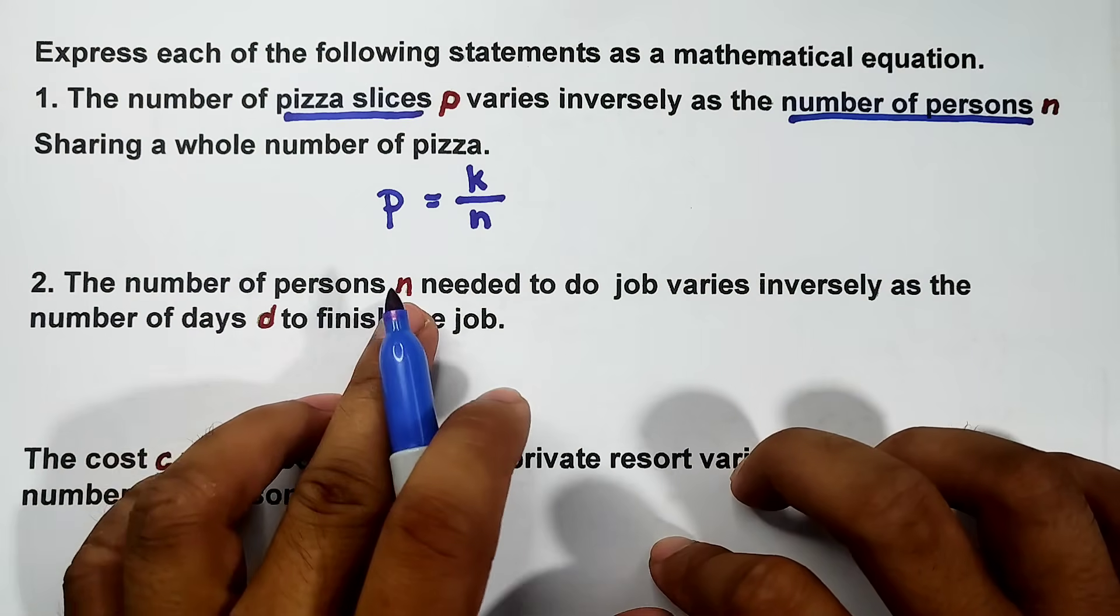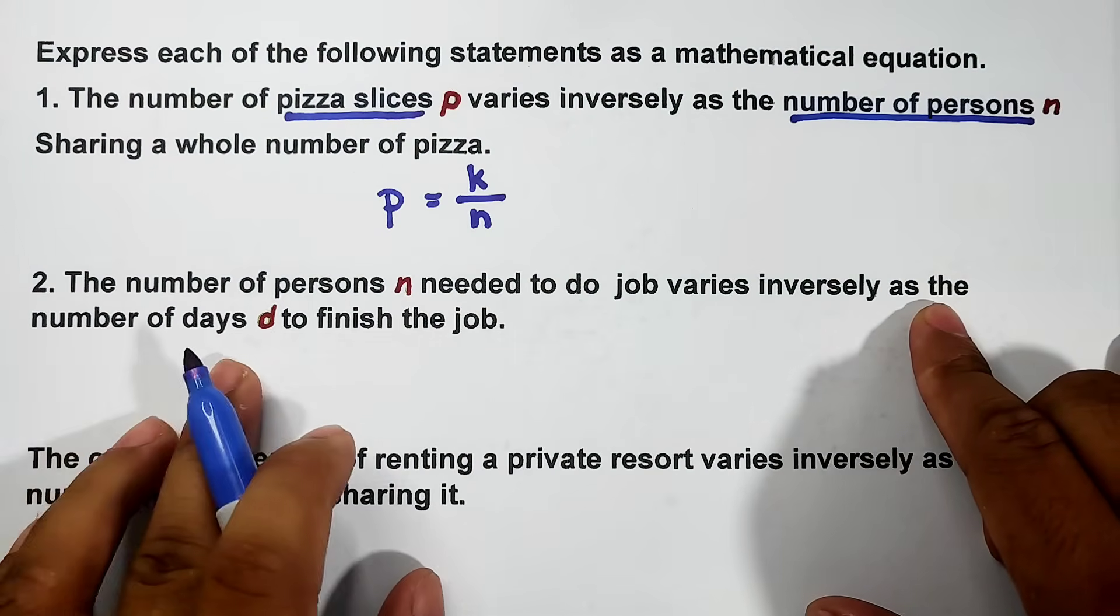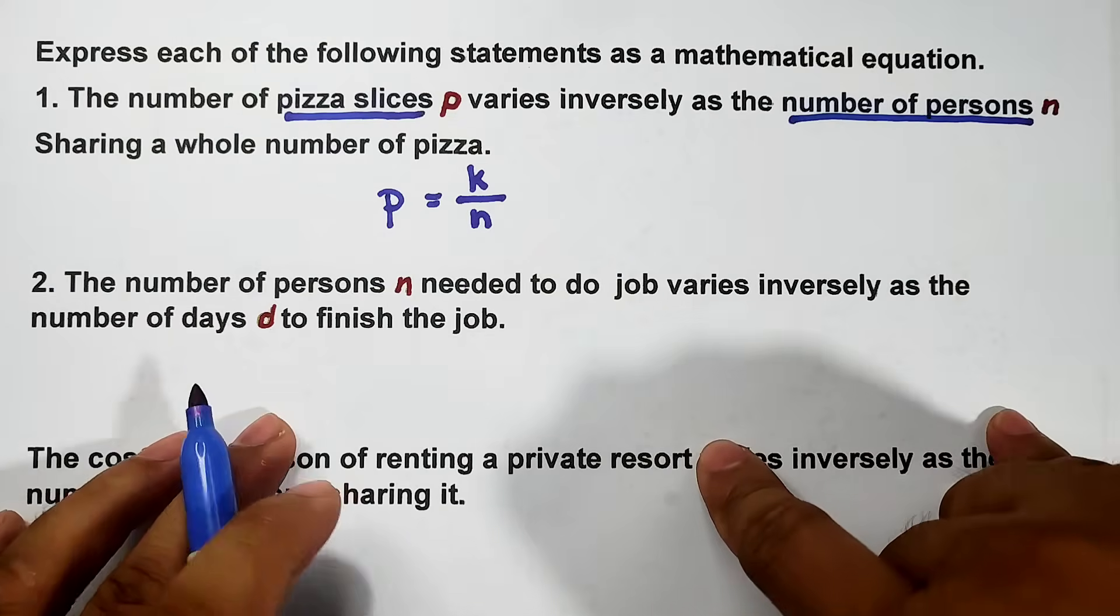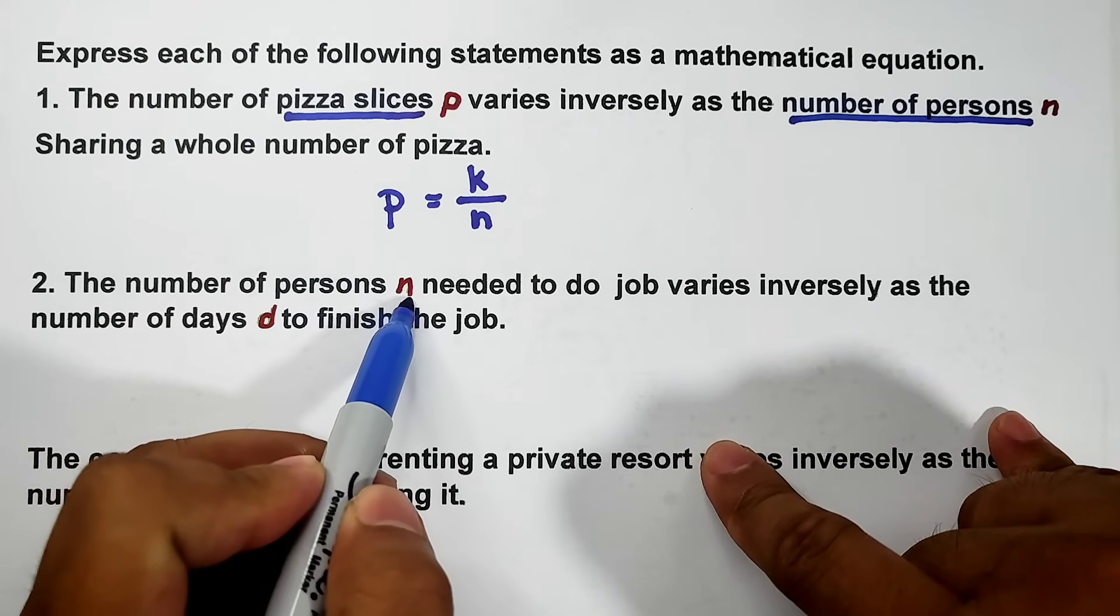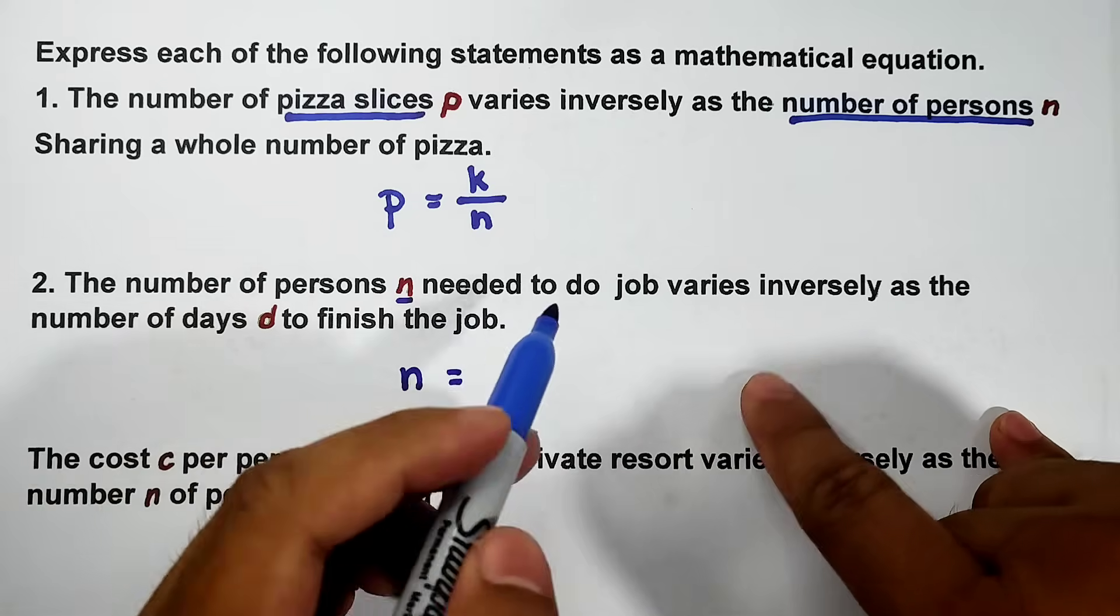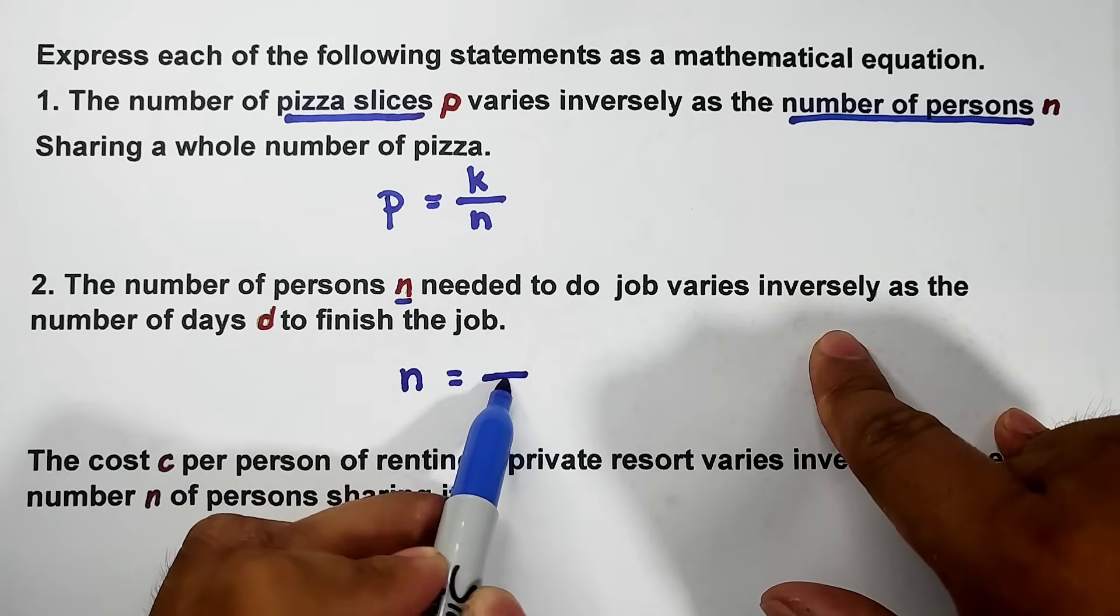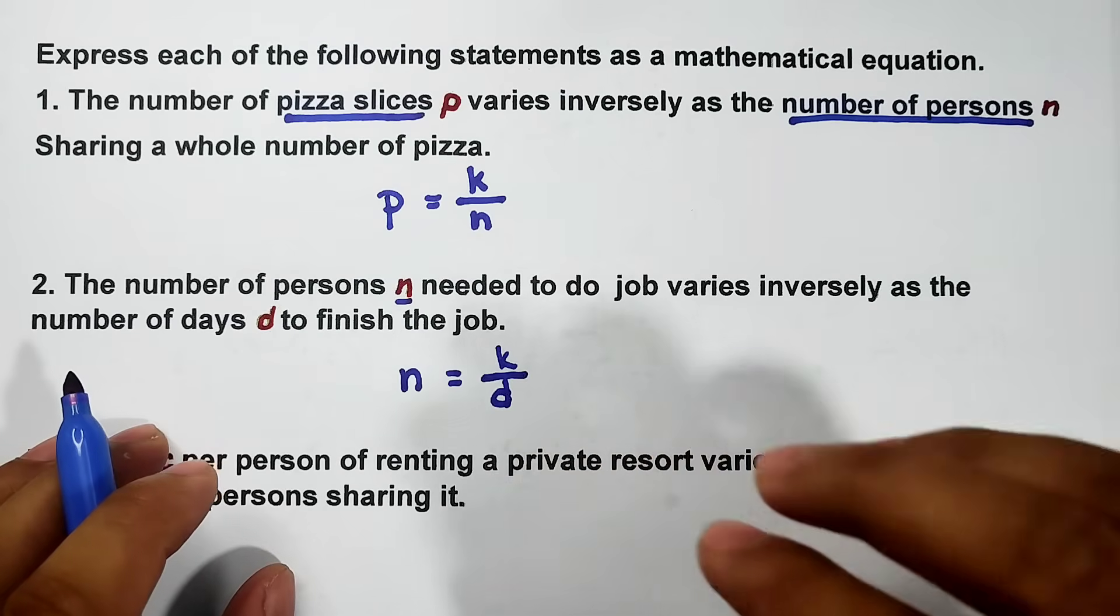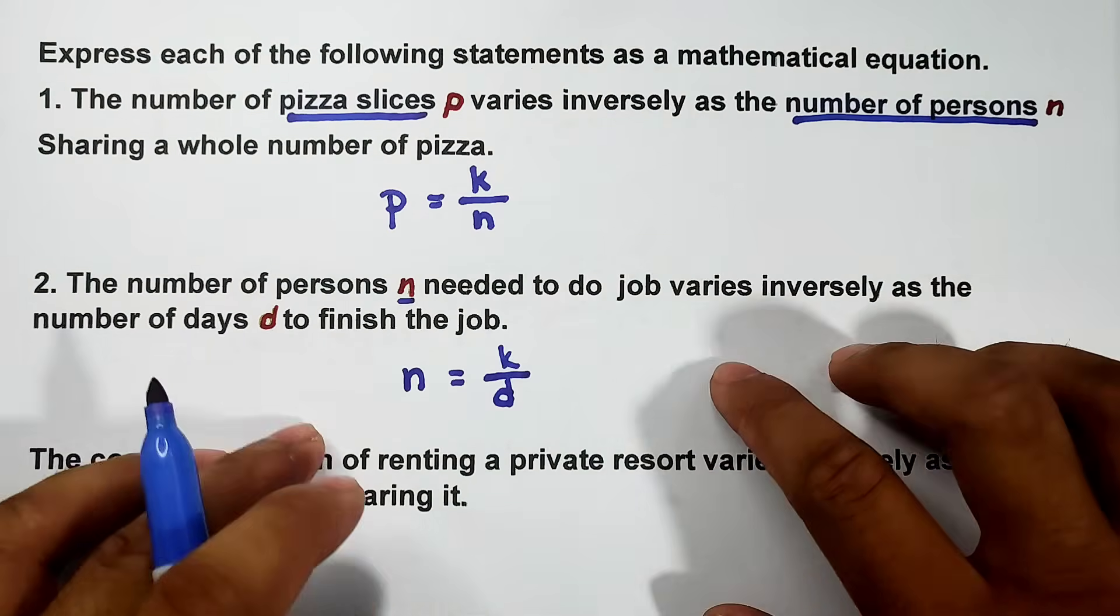Next number: the number of persons N needed to do a job varies inversely as the number of days D to finish the job. To represent this into an inverse variation equation, take variable N, then equals, varies inversely as the number of days - put that in the denominator, and then your constant.